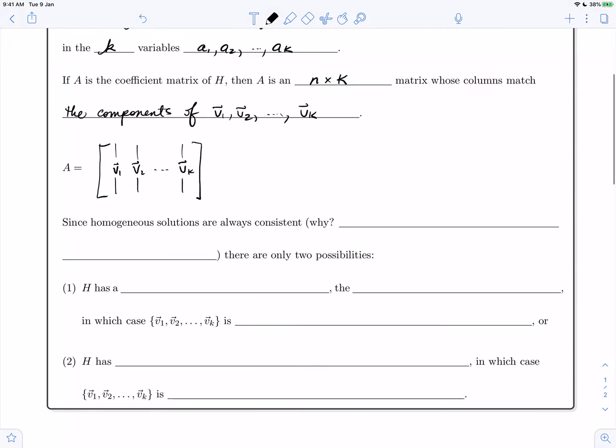We have seen that homogeneous systems are always consistent. Why? The trivial solution is always a solution, so the system is never inconsistent.